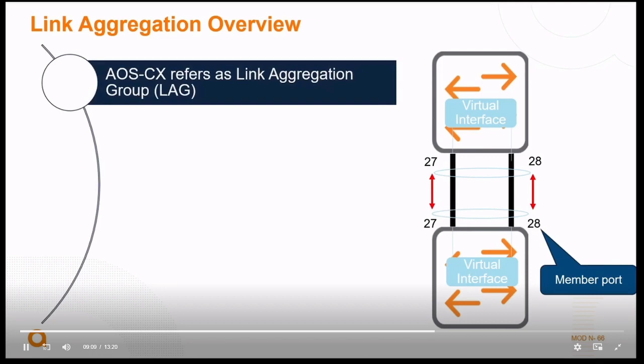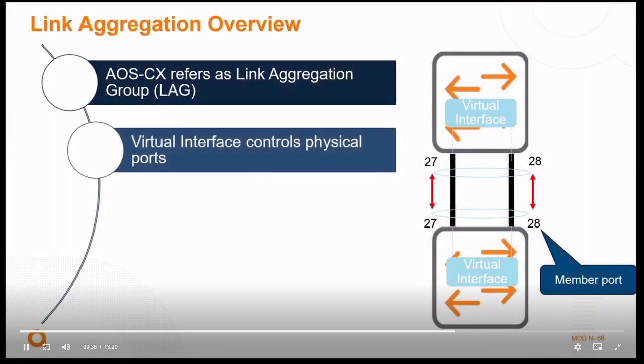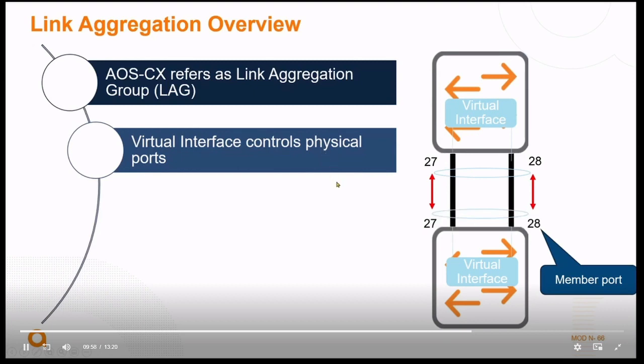The old Aruba OS operating system called it a trunk, which is a little confusing given that trunks mean you can pass multiple VLAN tags on the same interface. So stick with trunking for trunking, access for access, and LAG as your link aggregation. We're going to set up a link aggregation as its own virtual interface — these individual ports are no longer going to be identified as themselves. They're going to belong to a new interface known as the link aggregation interface, assigned a unique identifier or number. Protocols and processes now refer to it as a LAG.